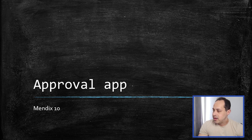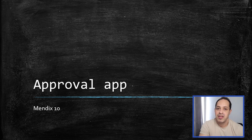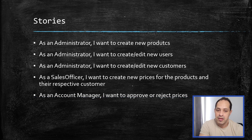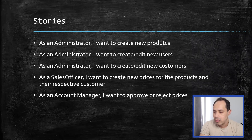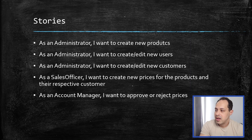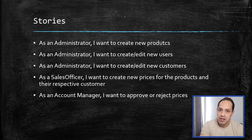We are going to develop an approval app — pretty simple, but we're going to learn a lot from it, specifically the basics of a Mendix application. As an admin, the stories we'll tackle are: create new products, create or edit new users, and create and edit new customers. So in our domain we'll have three main tasks: new products, new users, and new customers.